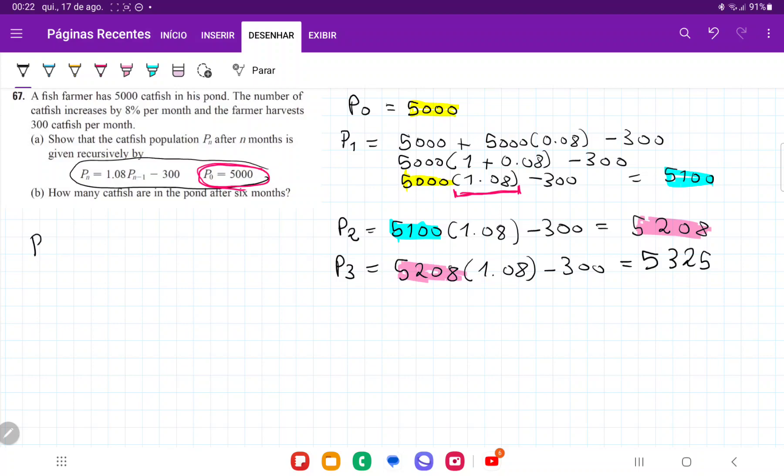So we can see here that, expanding it, that P(n) at a month, well, we're going to begin with the population of the previous month. So we begin with the population of n minus 1, and we multiply that by 1.08 because we want to take the population of the previous month, growing by 8%, and we remove 300 catfish from it. And so we have shown that this is where it comes from.